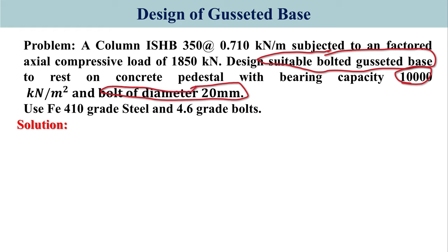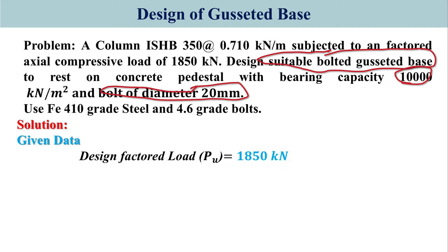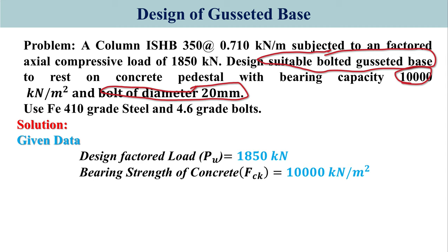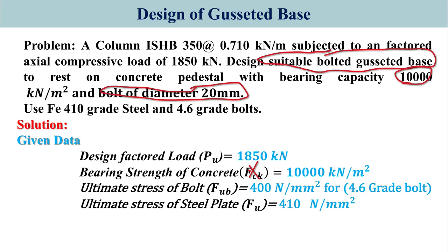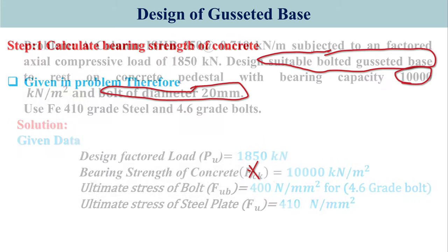The given data is: design factored load = 1850 kN; bearing strength of concrete = 10,000 kN per meter square; ultimate stress of bolt = 400 N per millimeter square for 4.6 grade bolt; and ultimate stress of steel plate, Fu = 410 N per millimeter square.